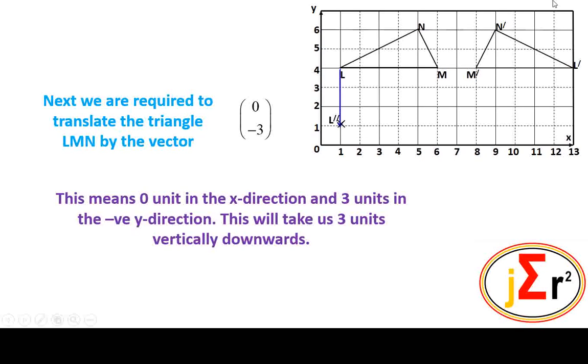As a matter of fact, there is no X movement or no movement in the X direction. Our first point, L double prime, is located 3 units vertically below L. Here, in alphabetical order M,